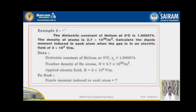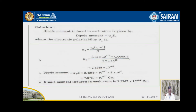The given data: the dielectric constant of helium at 0 degrees centigrade, epsilon_r, is equal to 1.000074. The density of helium atoms, that is the number of atoms per unit volume, n, is 2.7 × 10²⁵ per meter cube. The applied electric field is 3 × 10⁴ volt per meter. We have to calculate the dipole moment, given by alpha_e × E, where alpha_e is the electronic polarizability.